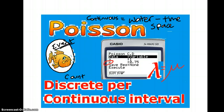Think of the fish as being the event and the water in the tank representing the time or space. If you've got ten fish in there, they could breed and you could end up with more fish — we don't know how many. Whereas with binomial, you've got a set number of trials; if you've got ten trials, you can't get more than ten positive outcomes. But in the water, we can end up with a lot of fish.